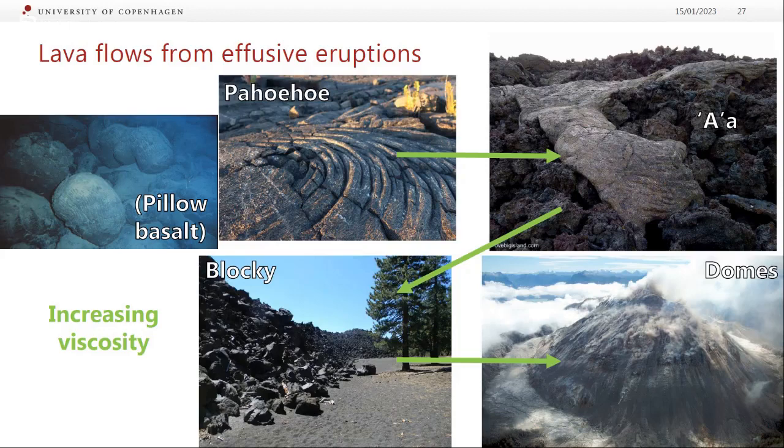If you have lots of vesicles in a highly viscous magma, then it will tend to erupt explosively. Basically, if your magma has time to degas near the surface — or perhaps it's already degassed from a previous eruption — then it may not have enough volatiles to erupt explosively and you might form something like a dome. But if it's still carrying lots of volatiles, it will never get to the stage of being a dome and will erupt explosively.